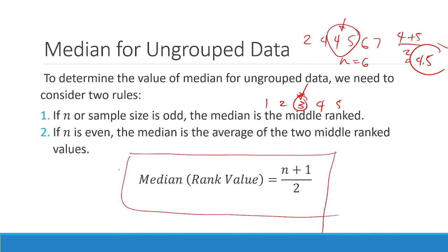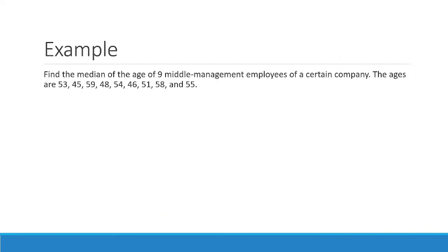Let's have some examples. We need to find the median of the ages of nine middle management employees of a certain company — the same example we used for the mean. The ages are: 53, 45, 59, 48, 54, 46, 51, 58, and 55. First, when computing for median, we need a data array — we need to arrange the data from lowest to highest.